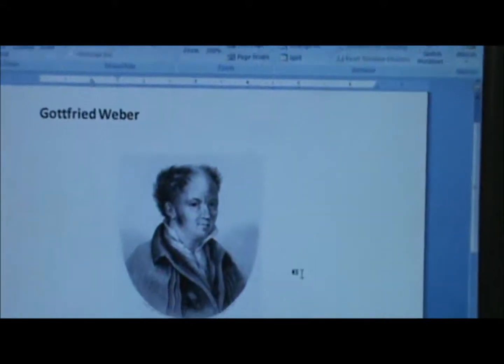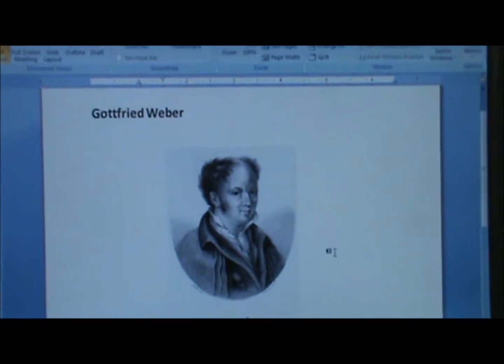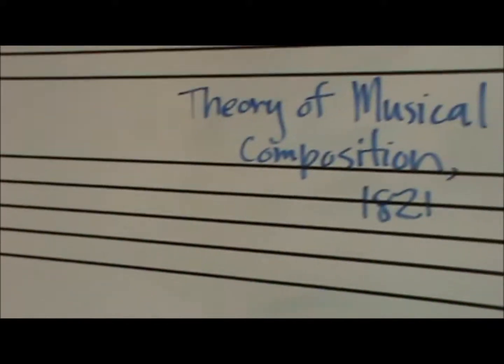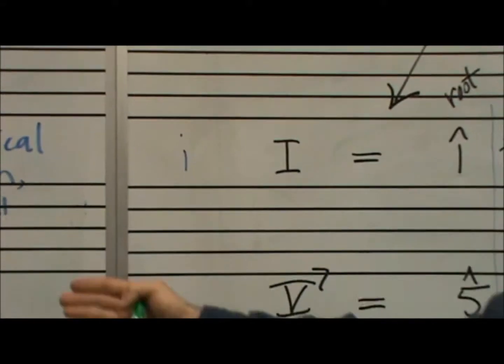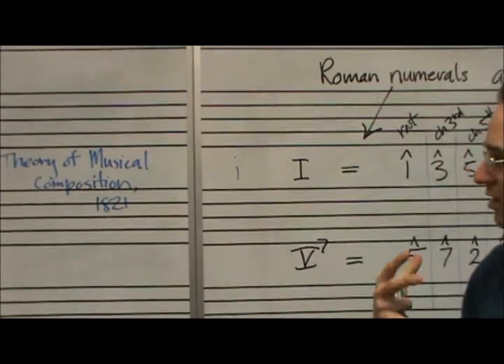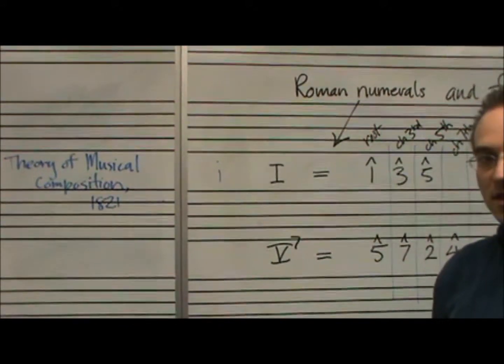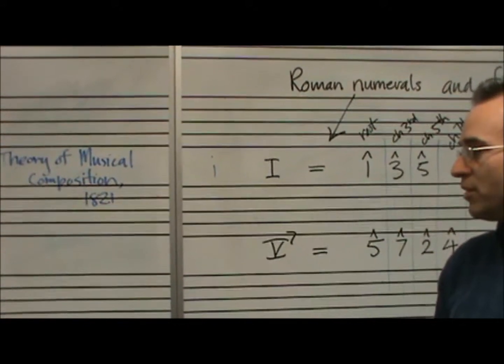He's the first one that said, let's come up with a way to symbolize what the chord is and position it in the key. And that's where we got Roman numerals. So that was introduced then, but only gradually did that idea come to be accepted by a lot of people.